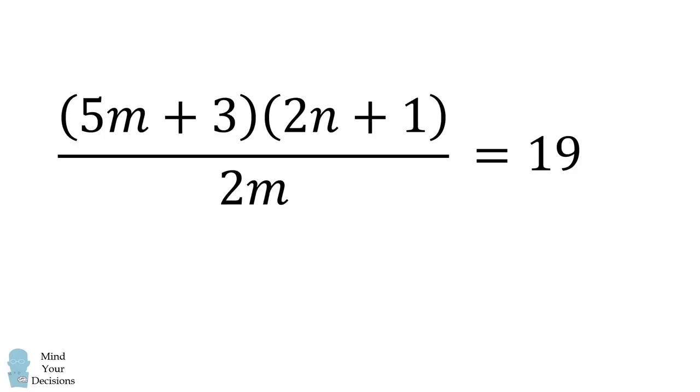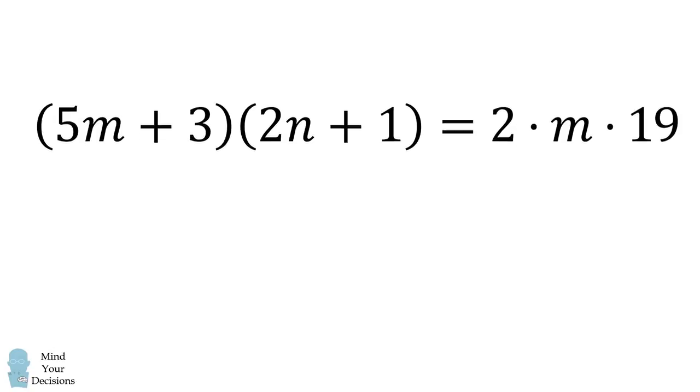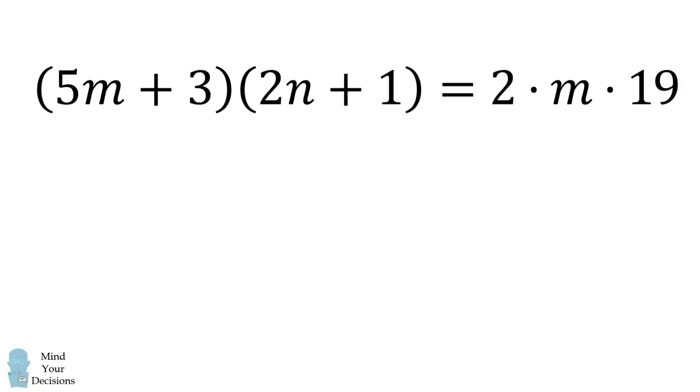We can then multiply both sides by 2 multiplied by m. From here, we will use a bit of number theory. Since n is a whole number that's greater than or equal to 1, 2n plus 1 is an odd number. That means 5m plus 3 must be an even number, and it must have a factor of 2.